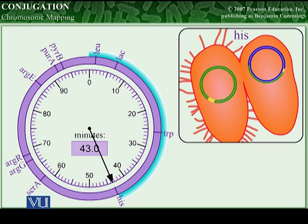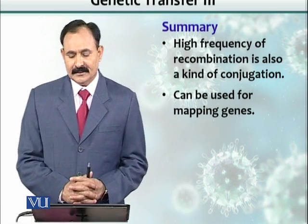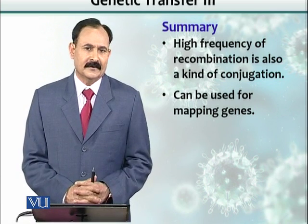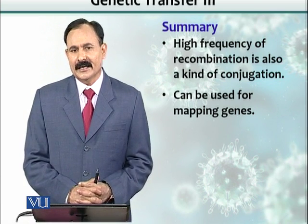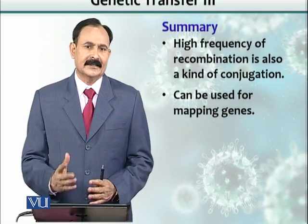All the genes targeted must be able to synthesize or provide some growth nutrients. We cannot map all genes with this technique. In summary, high-frequency recombination is also used as a way of transferring genes from one organism to another, and it can also be used for gene mapping, although it has its own limitations.